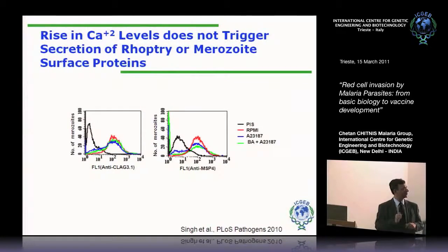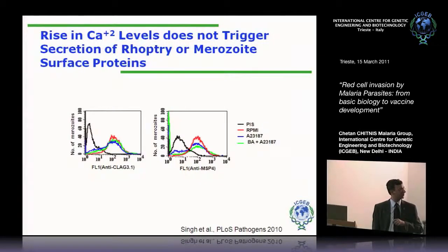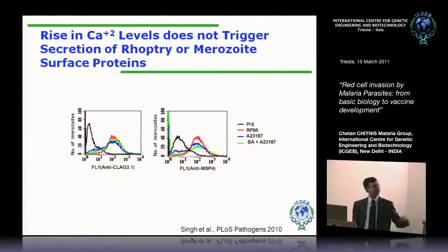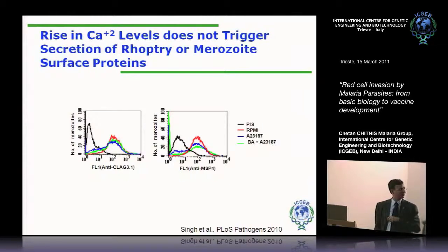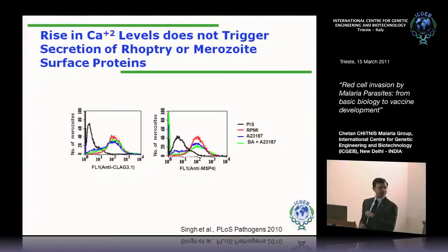Rise in intracellular calcium levels triggers microneme release, and we have tested this for other microneme proteins and confirmed by immunofluorescence assay. What about rhoptry proteins? CLAC 3.1 is a rhoptry protein. When you trigger a calcium spike, there is no change in levels of rhoptry protein on the surface. We also looked at MSP4, which is merozoite surface protein 4, constitutively expressed on the surface — again, no change. So triggering a calcium spike specifically triggers release of microneme proteins, not rhoptry proteins, and doesn't affect constitutive pathways.